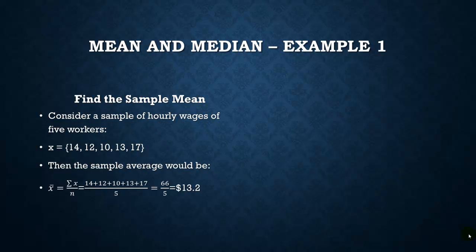So let's find the sample mean. Consider a sample of hourly wages of 5 workers. So these hourly wages are measured in dollars or dollars per hour, and the first one's making $14 each hour, next one $12, $10, $13, and finally $17 an hour. So the sample average would be we'd add up all those numbers, 14 plus 12 plus 10, etc. Notice my symbol I'm using here. And divide it by the total number, which is 5. So if we add up all the numbers, we get 66, then divide it by 5, we get 13.2, or $13.20 per hour.